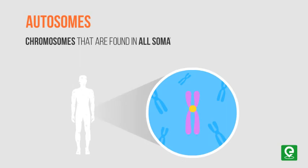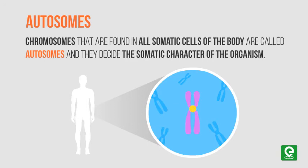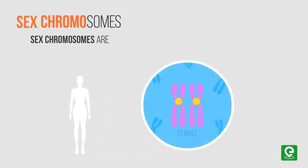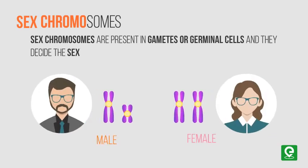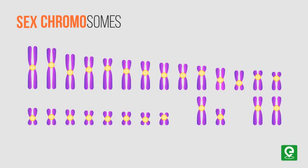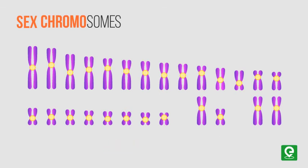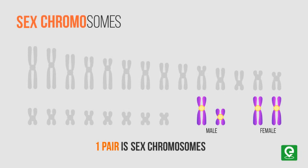Besides this, chromosomes are also classified into autosomes and sex chromosomes. Autosomes are found in all somatic cells of the body and decide the somatic characters of the organism. Sex chromosomes are present in gametes or germinal cells and decide the sex of an organism. In humans, there are 23 pairs (46 chromosomes total), of which 22 pairs are autosomes and the remaining one pair is sex chromosomes.